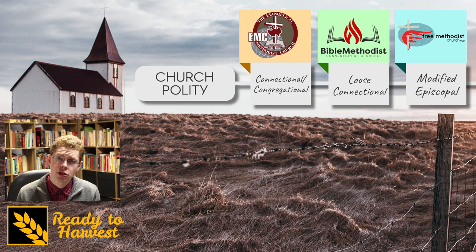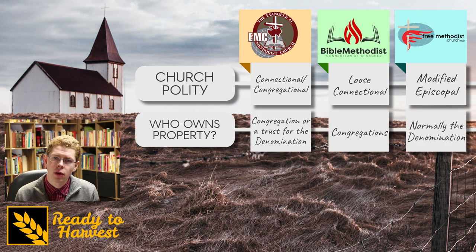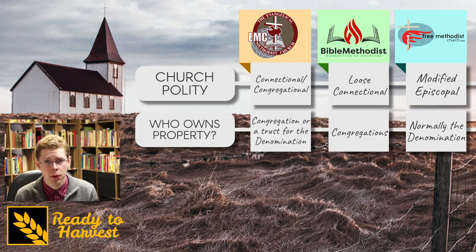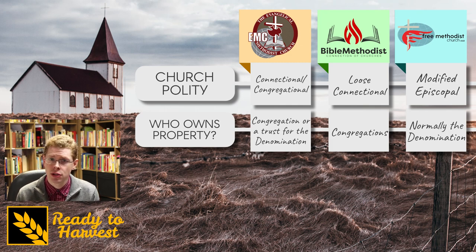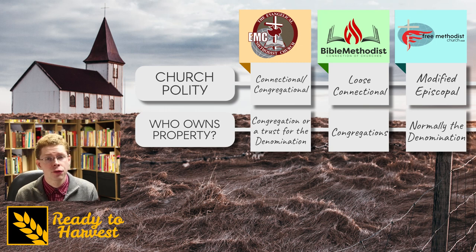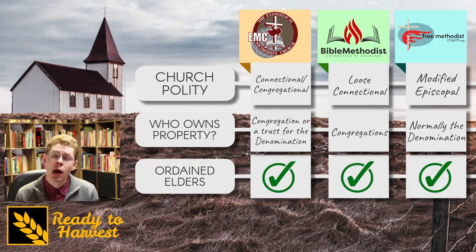The Free Methodist Church has a modified episcopal polity. In the Evangelical Methodist Church and Bible Methodist Connection, the congregations own their own property. The Evangelical Methodist Church does have a provision for churches to, if they choose, hold their property in trust for the denomination. The Free Methodist Church owns the property of most churches.